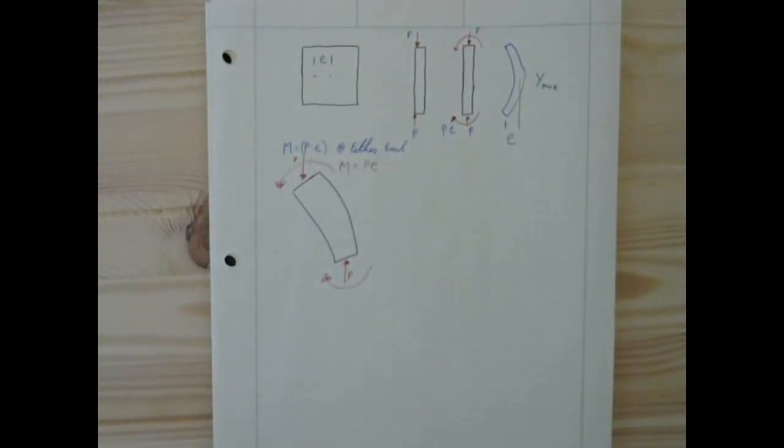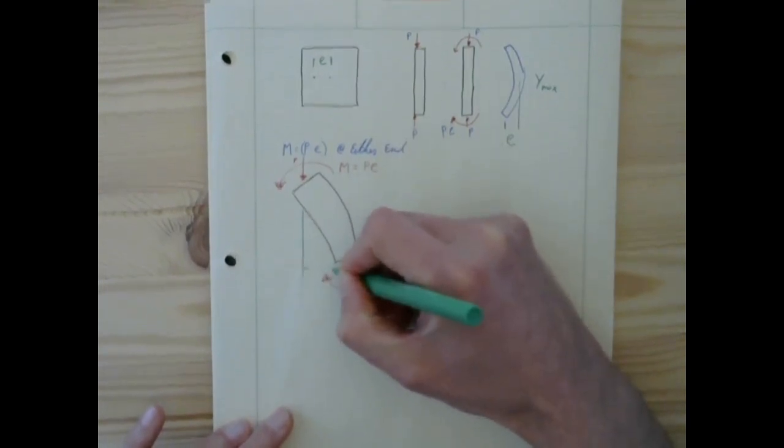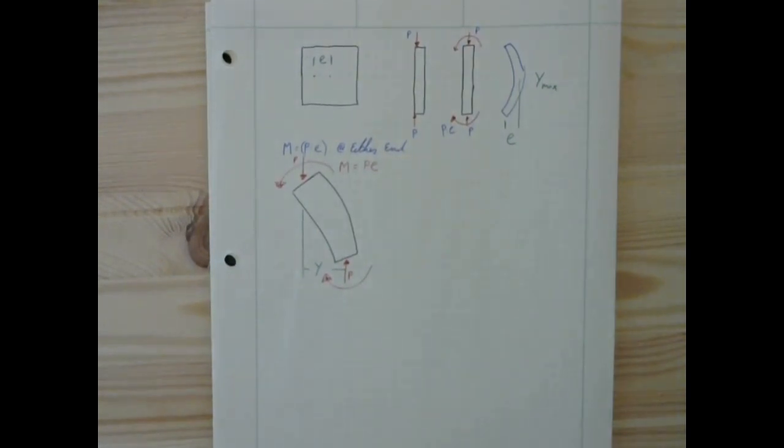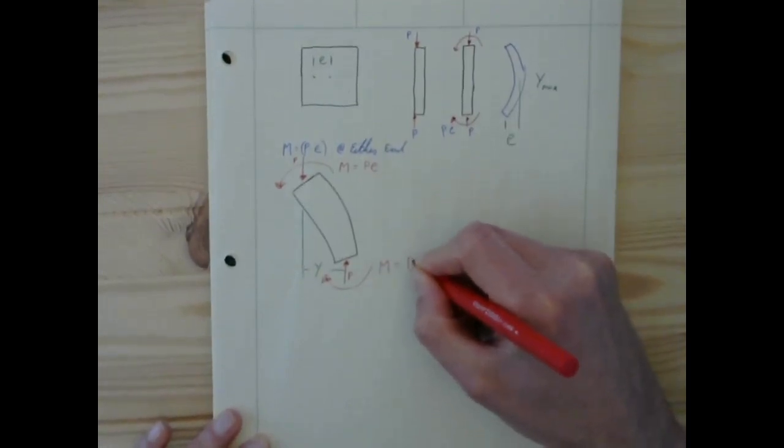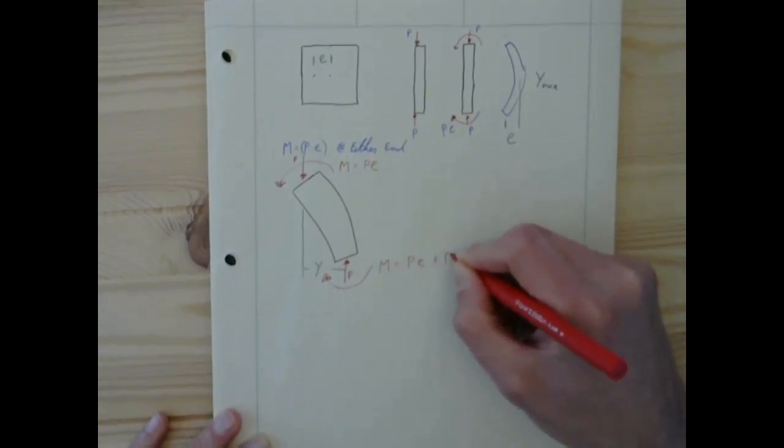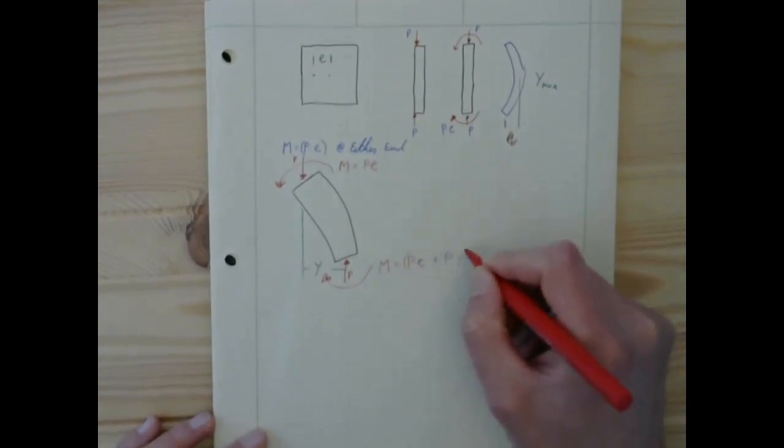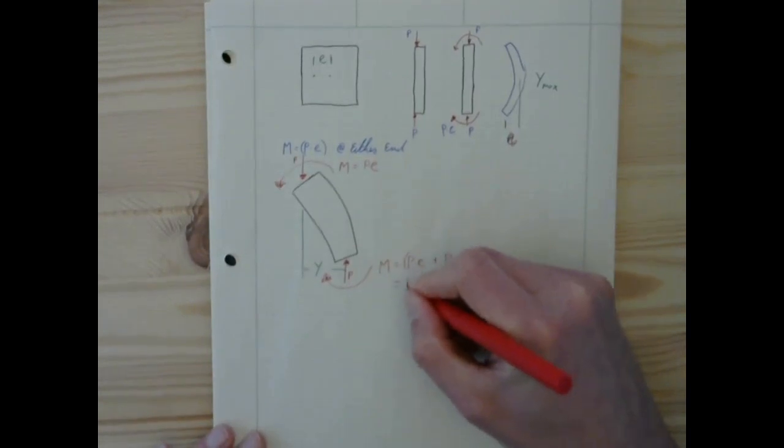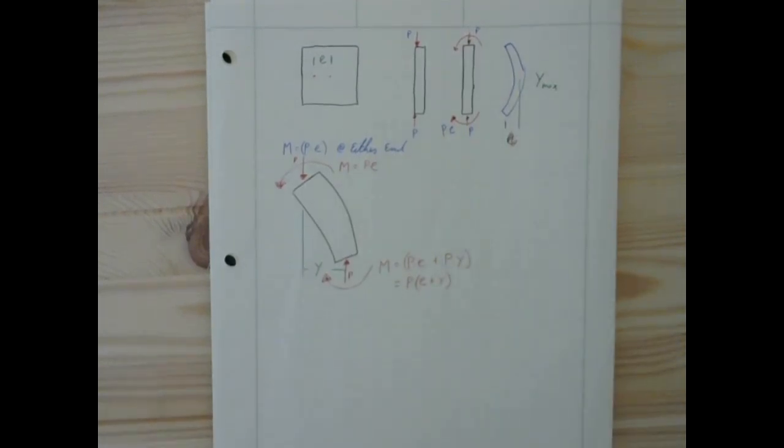So that means this is our deflection, our deflection y, which means that this moment right here is going to be equal to P times e plus P times our deflection y, or P times e plus y, and it's going to be in that direction.